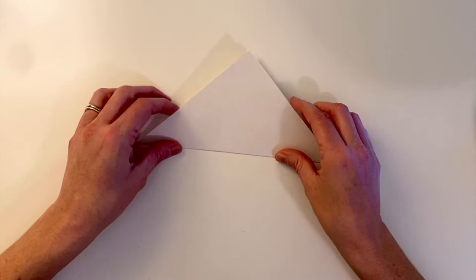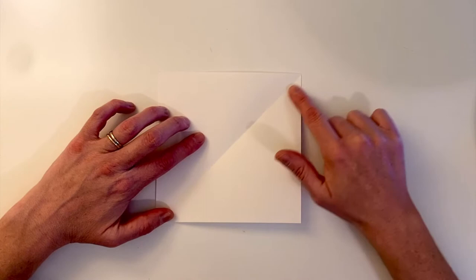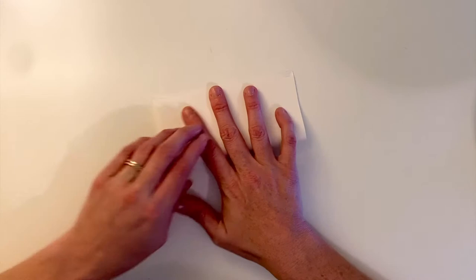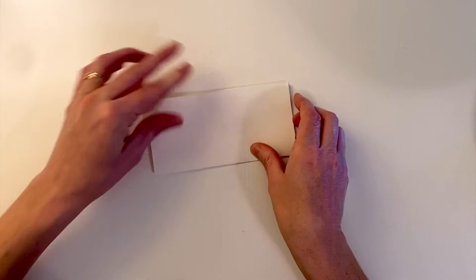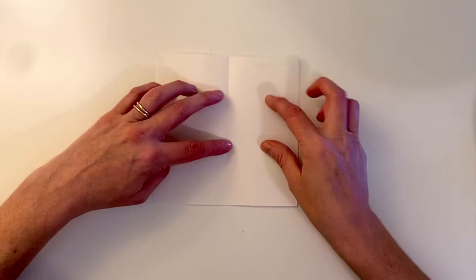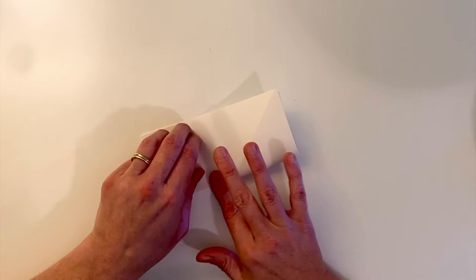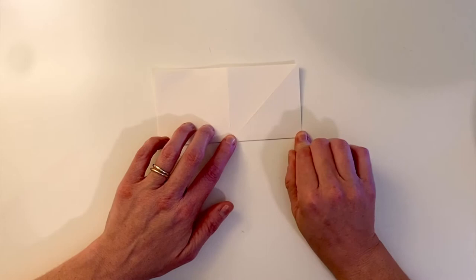And now fold it in half from the bottom to the top. So we're folding the square into a rectangle. Press that crease. Open it up again. Turn it and fold it again in half, forming another rectangle.